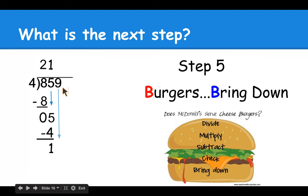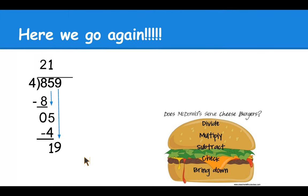And B burgers for bring down. So now we're going to bring down the ones place. Bring the nine down, put it next to the one to make the number 19. And here we go again.